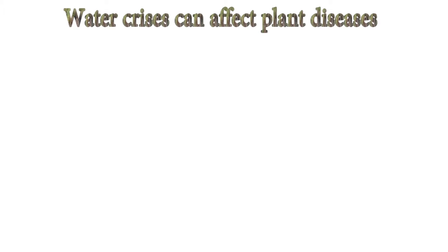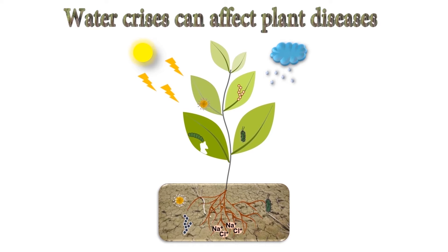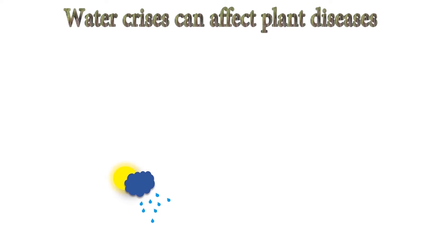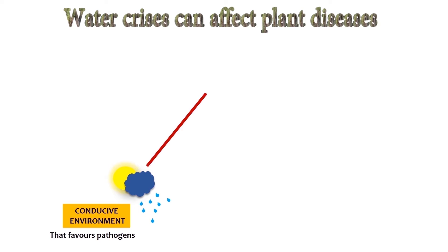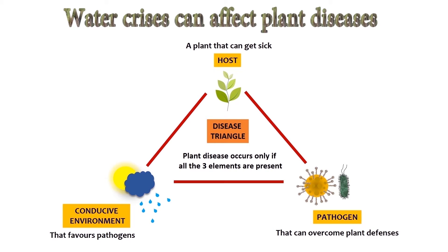Water crisis can affect plant diseases. Plants rarely face stresses in isolation, and plant-pathogen interactions are hugely affected by environmental conditions. Heavy rains or drought can significantly change the disease outcome. In the field, plants are exposed to countless microbes, but very few of these interactions lead to disease. The disease triangle shows the interaction of plants with pathogens and environmental factors.